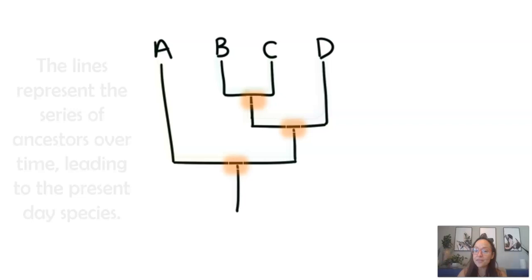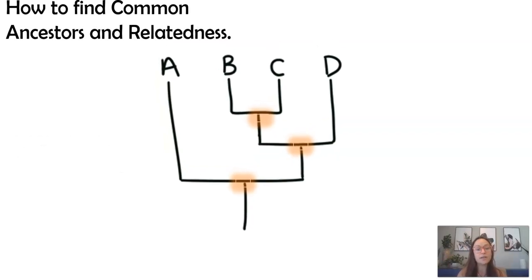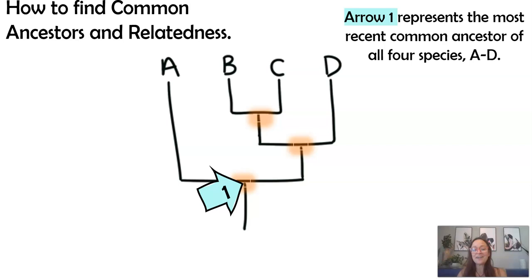Another thing that's important when looking at phylogenetic trees is understanding the last or most recent common ancestor and how different species are related. So, looking at this table, arrow number one is pointing to the last common ancestor, or you can phrase it as the most recent common ancestor between A, B, and C, and D. At that point in time was the last time there was a common ancestor for all four species.